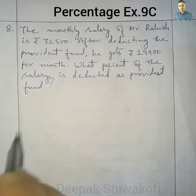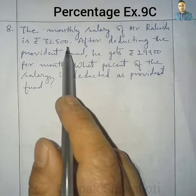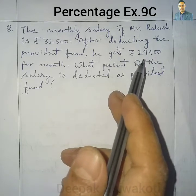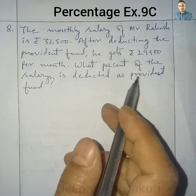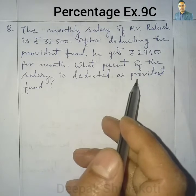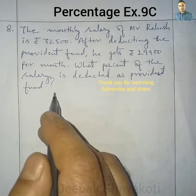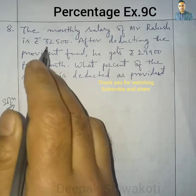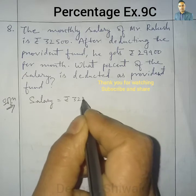Question number 8: The monthly salary of Mr. Rakesh is rupees 32,500. After deducting the provident fund, he gets rupees 29,900 per month. What percent of the salary is deducted as provident fund? The difference of these two will give us the amount deducted as provident fund. The salary is rupees 32,500.